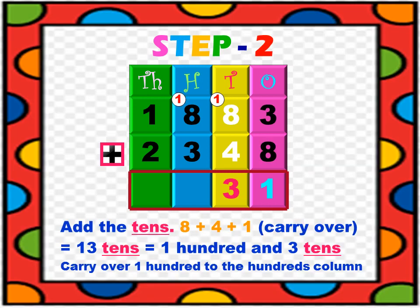Step 2: Add the tens. 8 tens plus 4 tens equals 12 tens, plus the 1 we carried over from the ones place, equals 13 tens. That is, 100 and 3 tens. So we carry over 100 to the hundreds column and 3 tens stay in the tens column.